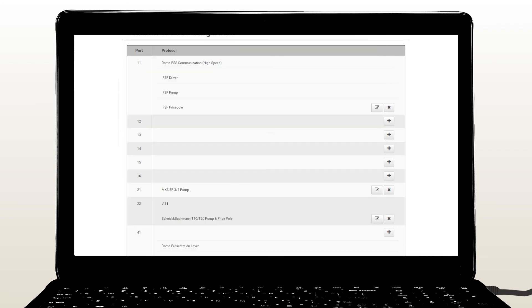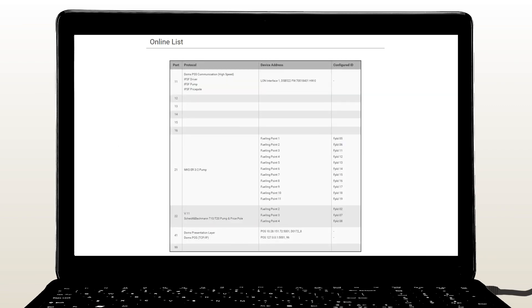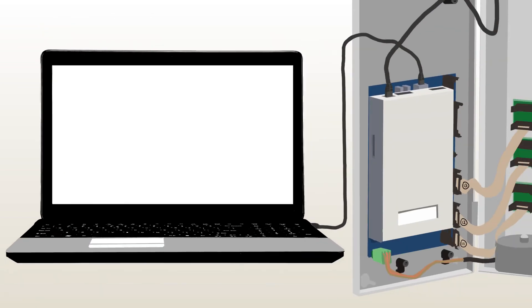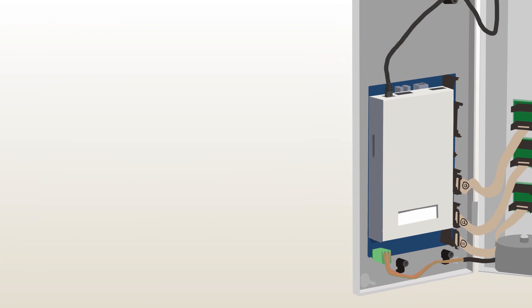Close your configurator and return to the FCC web application. Select menu 71 online list and validate that all the devices connected to the PSS are online. Log out of the PSS web application and disconnect your service PC from port 42.